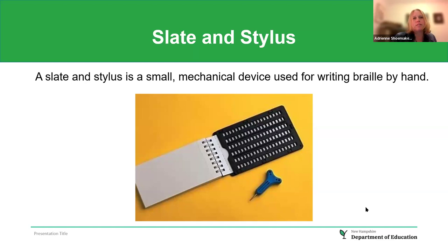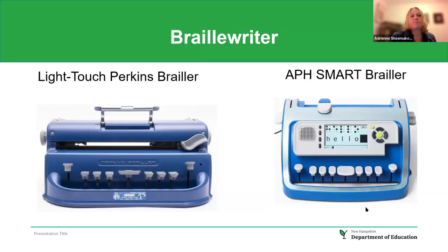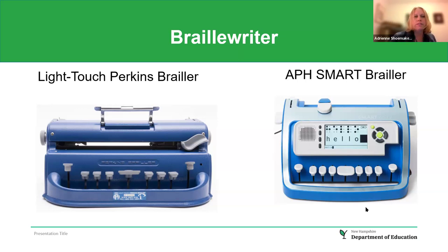A slate and stylus is a small mechanical device used for writing Braille by hand. A small slate goes over a notebook and the stylus is used to punch the dots for the Braille. Braille writers include the Light Touch Perkins Brailler and the APH Smart Brailler, which has auditory feedback. There is also a large print SIM Braille for beginning Braille students.